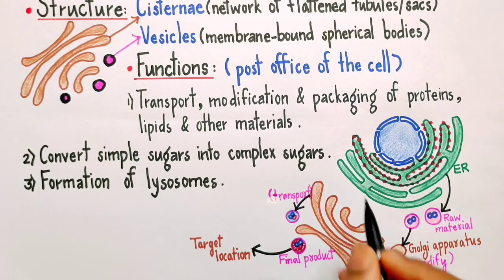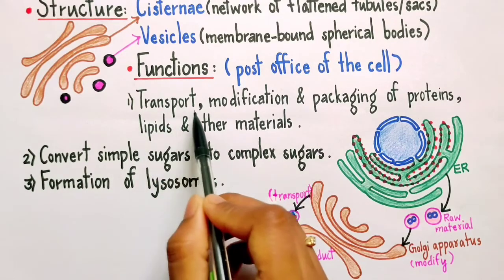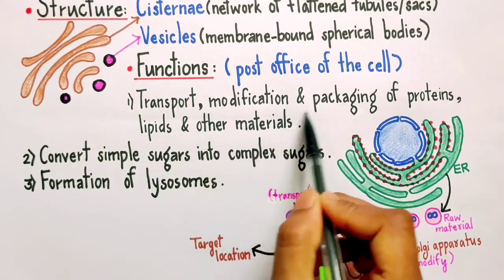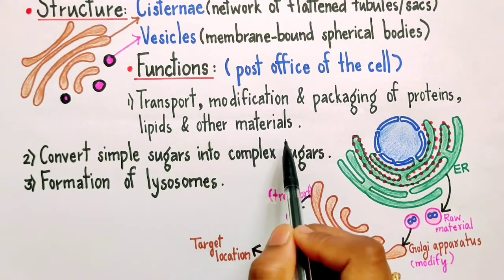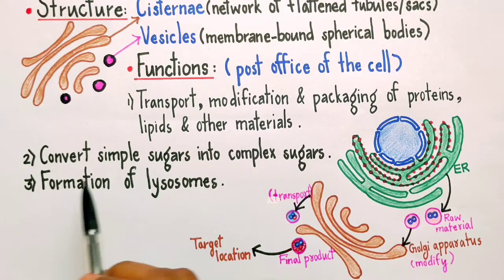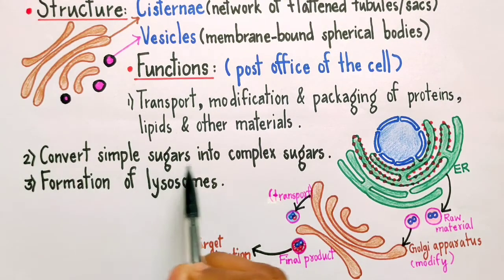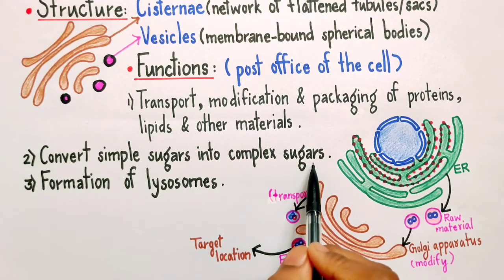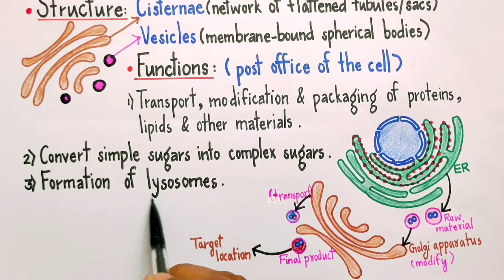So on the whole we can say Golgi apparatus helps in the transport, modification and packaging of proteins, lipids and other materials. Other than this, they are also involved in converting simple sugars into complex sugars and they have one more important function that is they help in the formation of lysosomes.